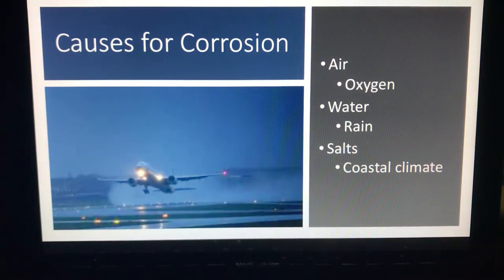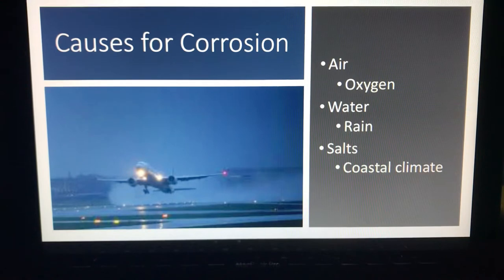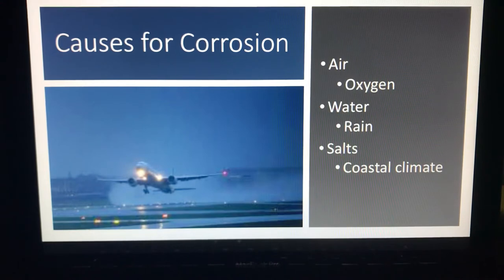Causes for corrosion in flight: air — just the air beating against the aircraft at intense wind speeds. Water — flying in rainy seasons or rainy climates, water beating on the outside of the aircraft and getting into all the little nooks and crannies. And salts, when you're operating in coastal climates — salt is a very corrosive material.